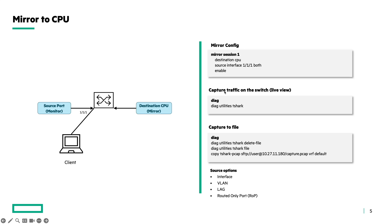If you want to view the packets live on the switch console, you can use the tshark utility. First, you need to enable the diagnostics commands on the switch using the command 'diag' and then 'diag utilities tshark'. This will give you a live view of the packets that are mirrored to the switch CPU. It is also possible to capture and save the packets to a file. Again, you first need to enable the diagnostics commands on the switch, and then it is recommended to first delete the previous packet capture file using the command 'diag utilities tshark delete file'.